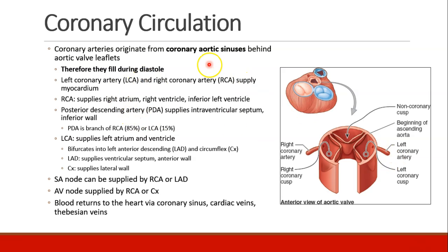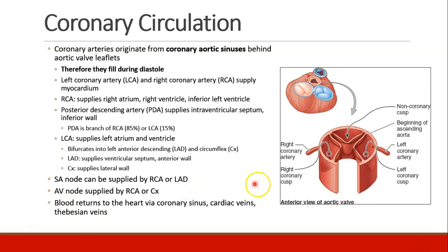The left coronary and the right coronary arteries supply myocardium. The right coronary mostly supplies the right atrium, right ventricle, and a little bit of the left ventricle. There's a posterior descending artery, which supplies the intraventricular septum and the inferior wall — that's usually a branch of the right coronary, but sometimes it's a branch of the left. The left coronary artery supplies the left atrium and the ventricle, and it bifurcates into the left anterior descending (LAD) and the circumflex arteries, which supply the ventricular septum, anterior wall, and lateral wall. The SA node can be supplied by the RCA or the LAD, and the AV node can be supplied by the RCA or the circumflex.